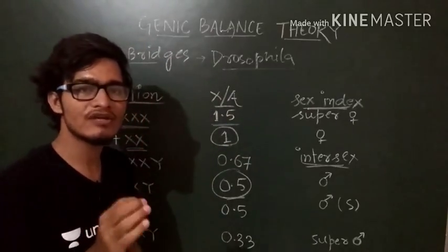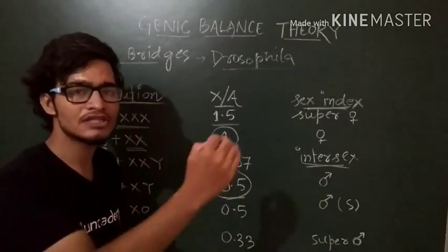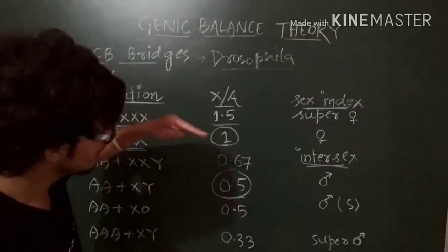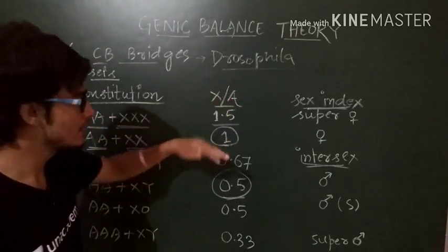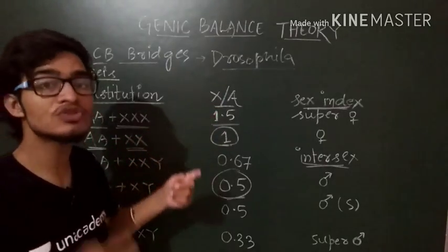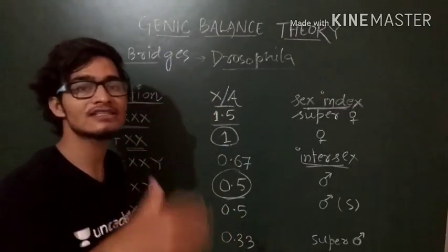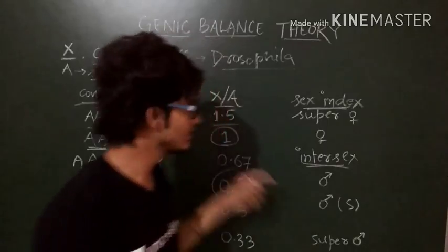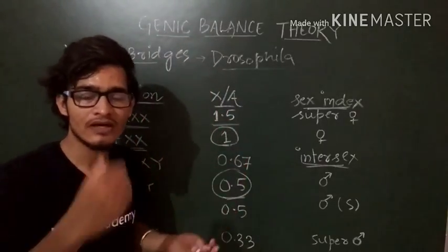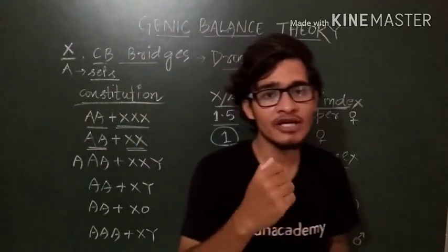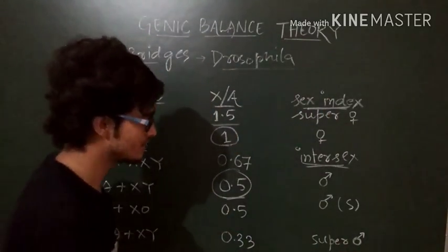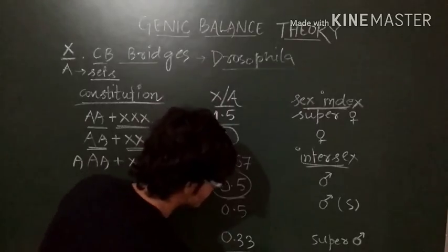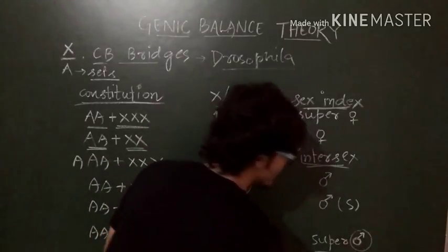Anything between 0.5 and 1 represents intersex. If the constitution is above 1, above 1, it is going to be super female, since it has exceeded the limits of female. So it is going to be super female. And if the X by A ratio is less than 0.5, it is going to be super male. For example, it is 0.33 in this case, so it is super male.